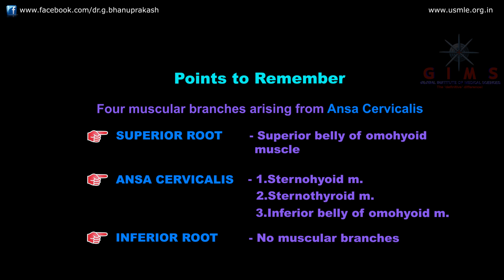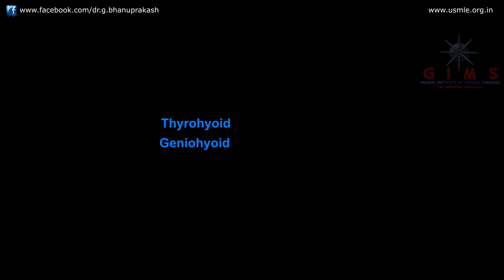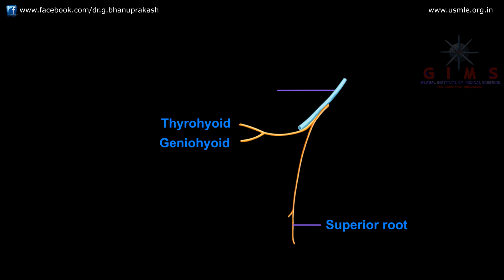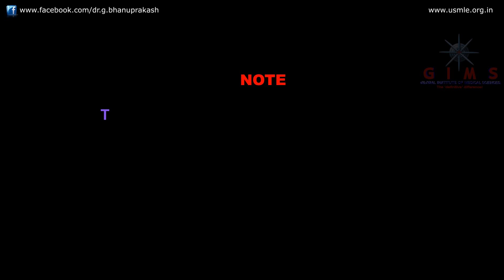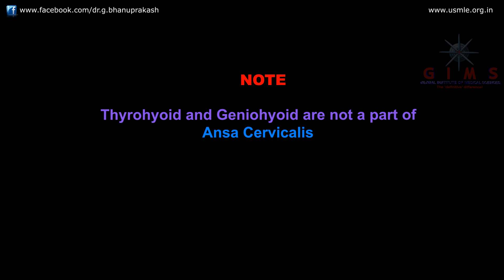Note that the thyrohyoid and geniohyoid are supplied by separate branches from the first cervical nerve through the hypoglossal nerve, and they are not a part of the ansa cervicalis.